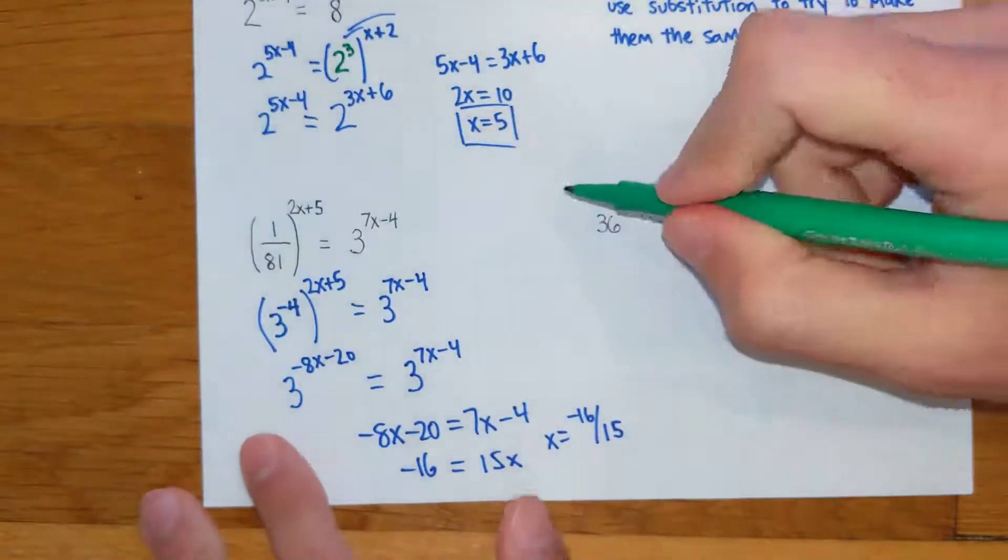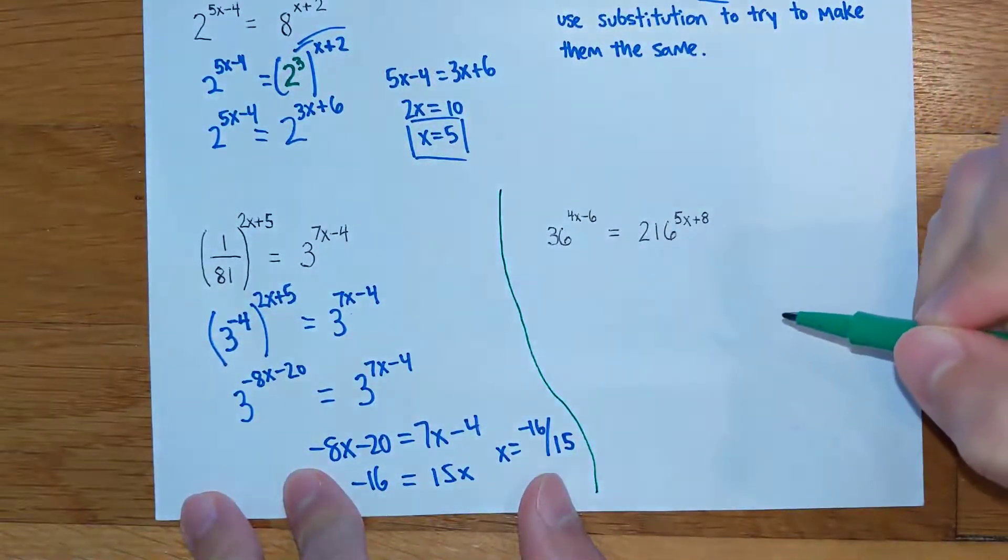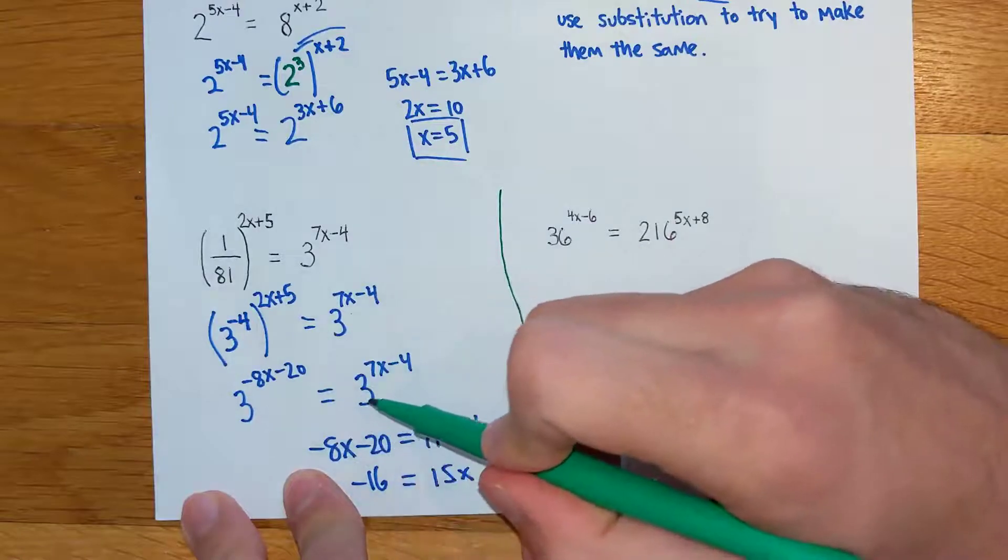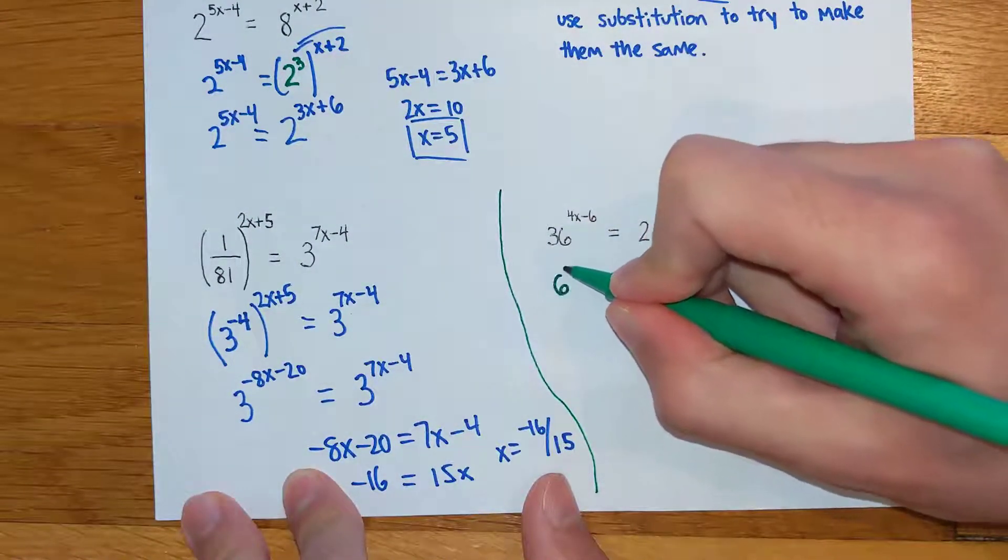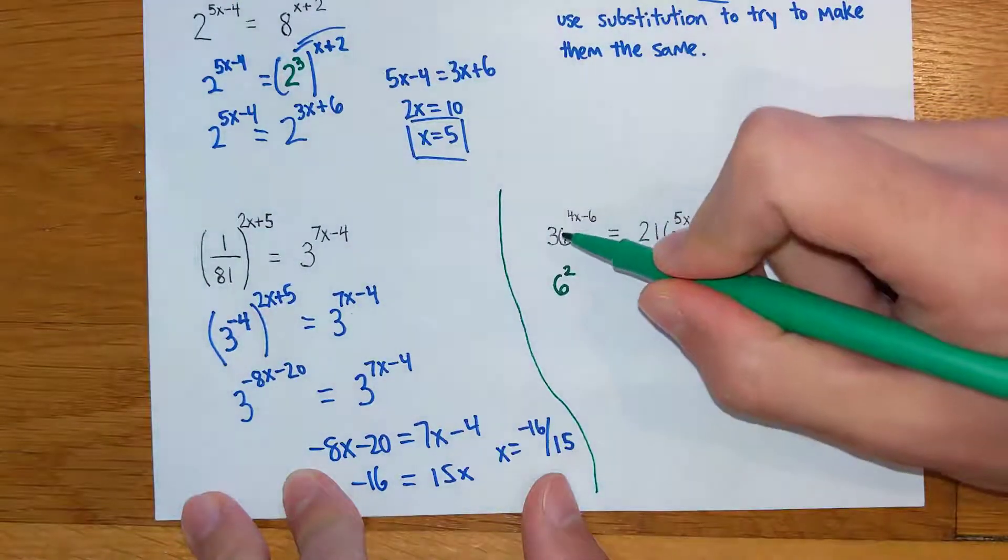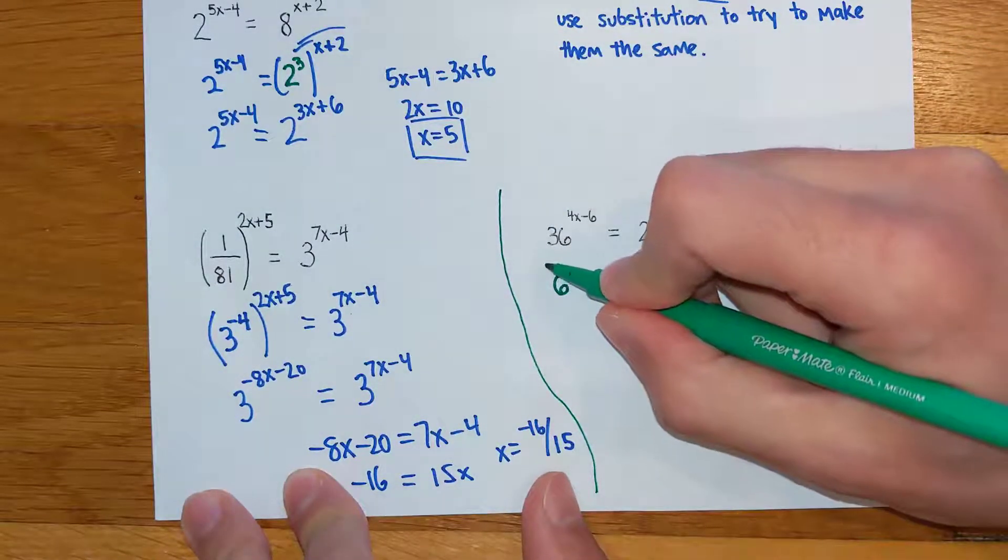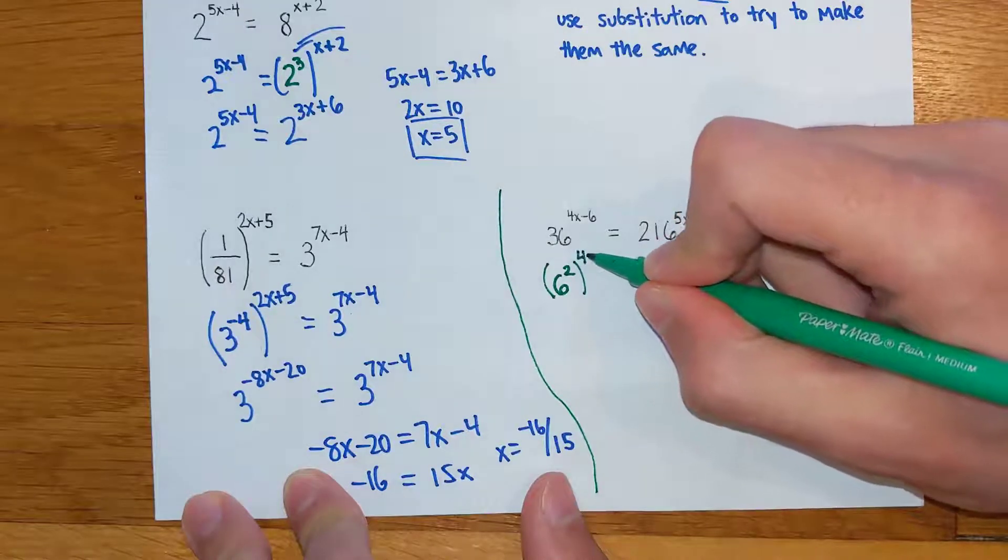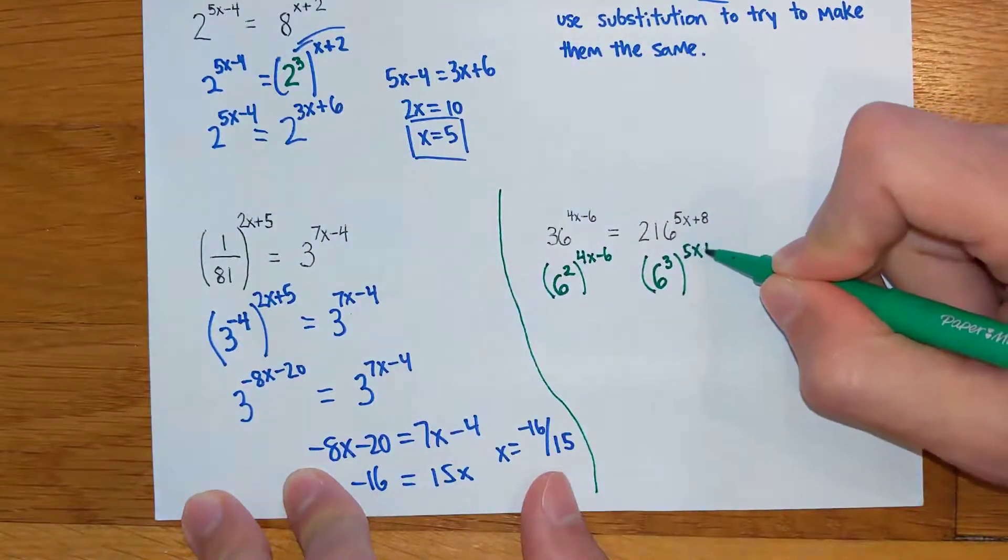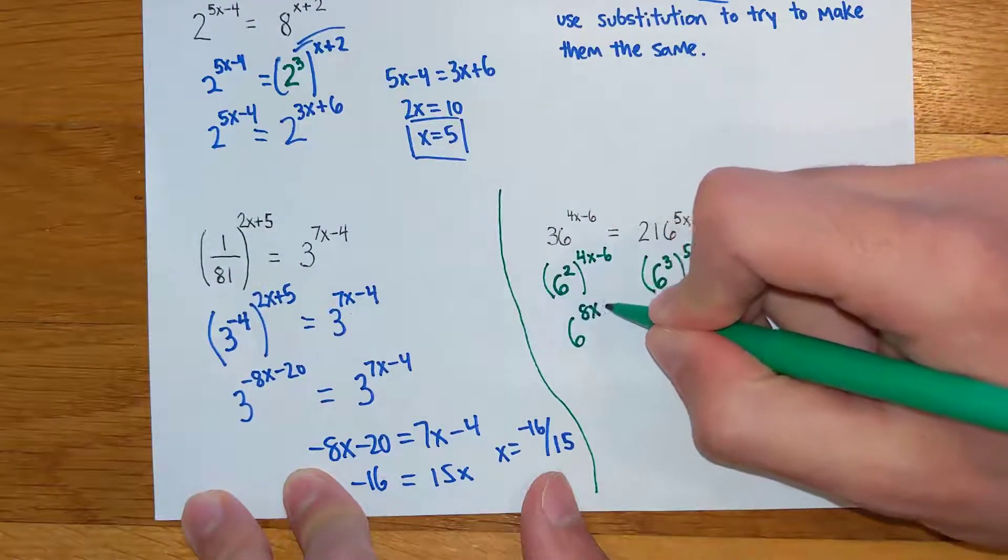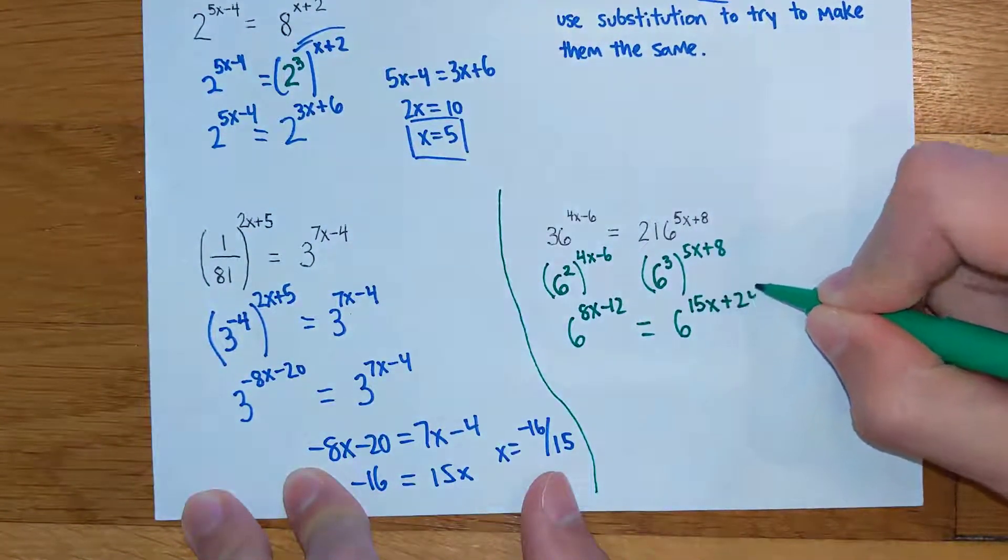Alright, one more. So on this last problem right here, sometimes it might be that you have to change both sides of the problem instead of just one. Usually when you do these problems, you want your bases to be basically whole numbers that are less than 10. That's usually how these work out, so you get nice, clean, easy bases. Turns out this side is 6 to the 2nd power. 36 is the same thing as 6 to the 2nd. And 216 is actually 6 to the 3rd power. Now you might be saying, how do you know that? And I will show you a little list to finish this video off. But you just substitute and these both can be turned into 6s. So if I do that, I'm going to have 6 to the 8x minus 12, and I'm going to have 6 to the 15x plus 24 if you distribute that.